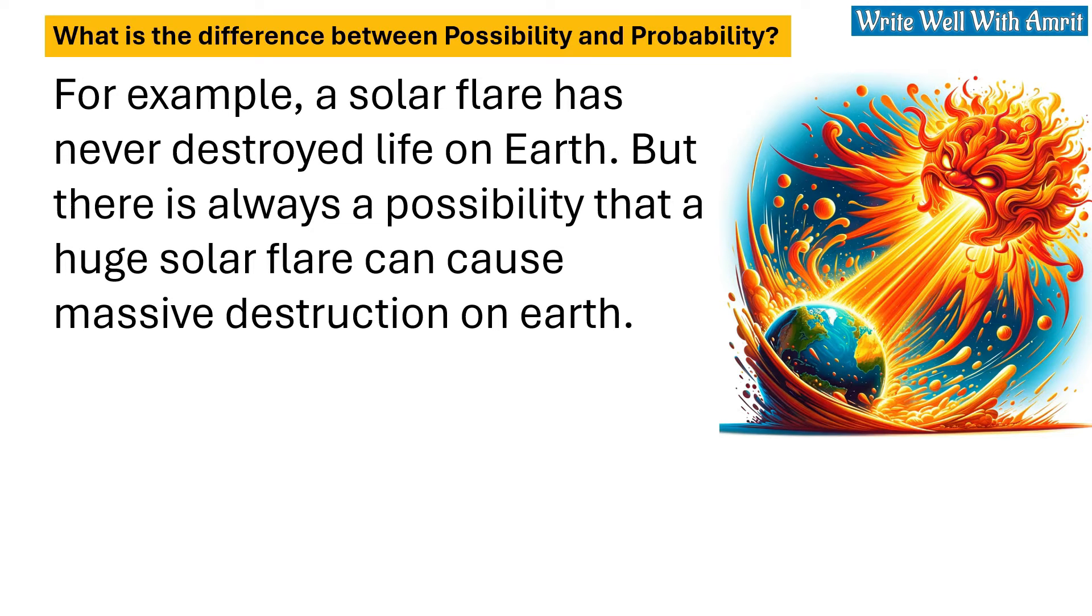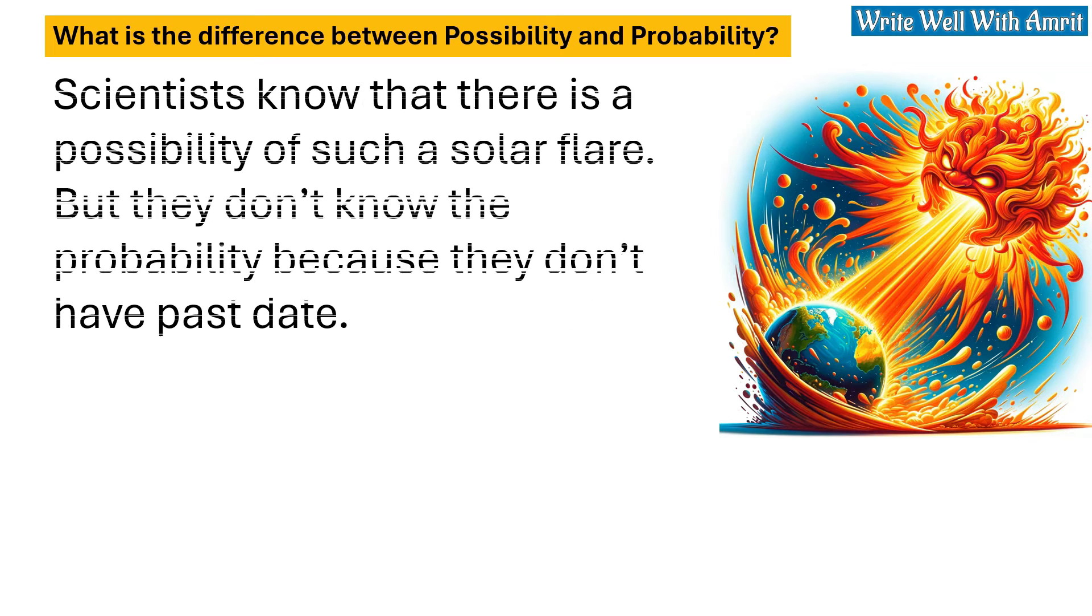For example, a solar flare has never destroyed life on Earth. But there is always a possibility that a huge solar flare can cause massive destruction on Earth. Scientists know that there is a possibility of such a solar flare, but they don't know the probability because they don't have past data.